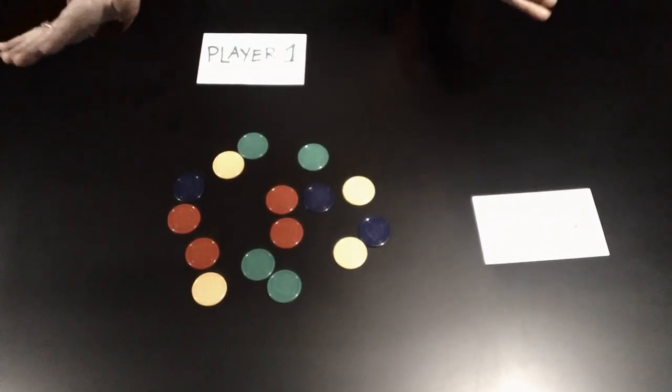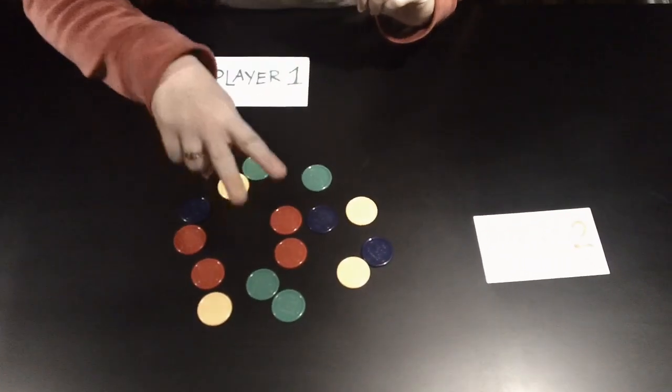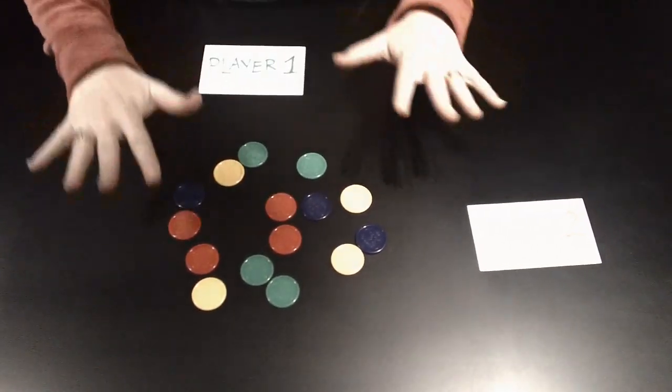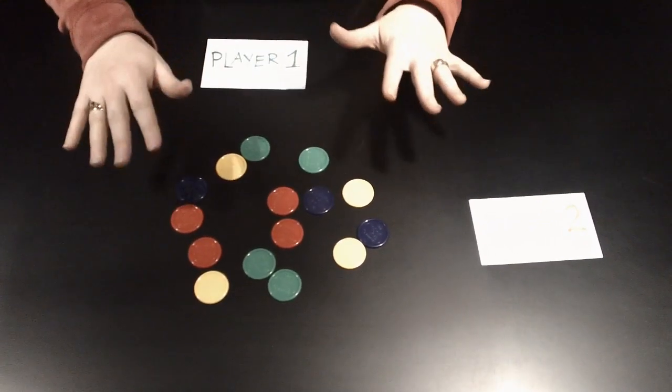On your turn, and it will alternate turns, you can take one, two, or three pieces. It doesn't matter who goes first because the kids will figure out the strategy if they play the game enough. It is a game of strategy.